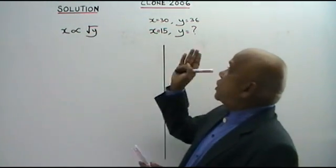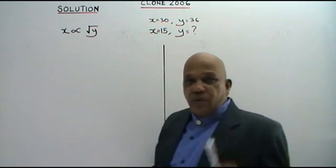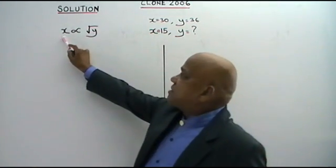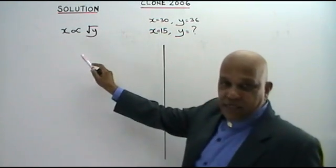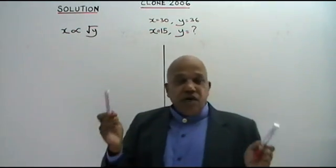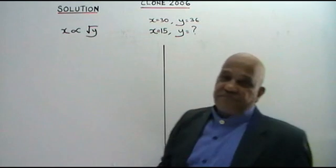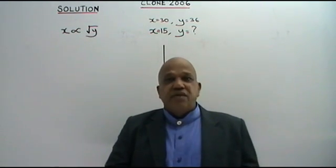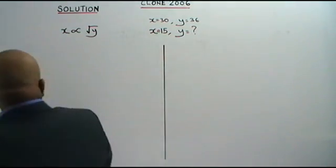Here I have a clone question based on the year 2006, SPM Paper 1. You are given X varies directly as the square root of Y, and when X is 30, Y is 36. You are asked to find the value of Y when X is 15. As usual, we have to find the value of K, the constant.